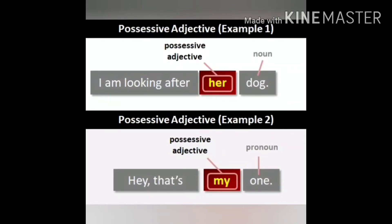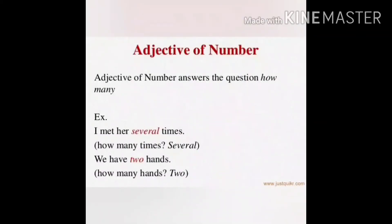Next we have adjectives of number — adjectives that tell you the number of a noun. Adjectives of number are of four types: indefinite, distributive, cardinal, and ordinal. Indefinite adjectives don't specify a particular number. For example: 'some people are there' and 'give me any pen' — 'some' and 'any' do not tell you a specific number, so they are indefinite adjectives.